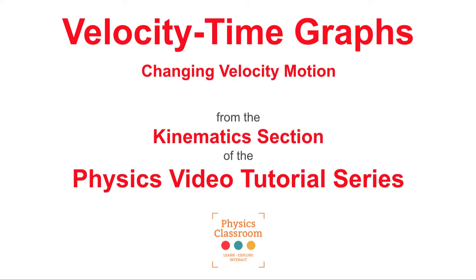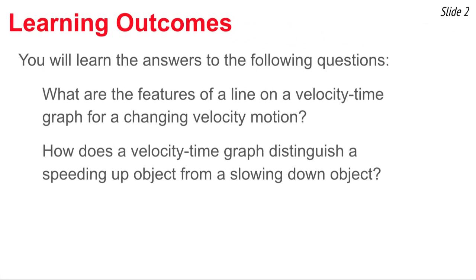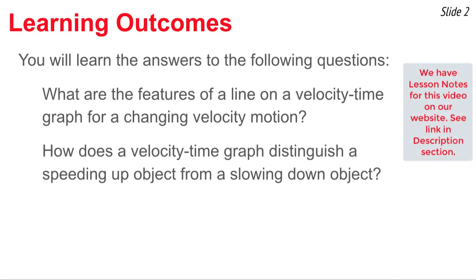You're watching the Physics Classroom's video tutorial series on kinematics. The topic of this video is velocity-time graphs for changing velocity motions. The questions we wish to answer are: what are the features of a line on a velocity-time graph for an object that's changing its velocity, and how can we distinguish speeding up from slowing down?